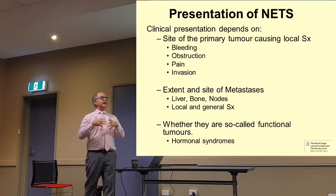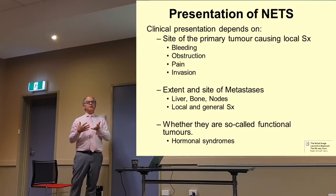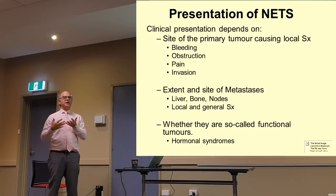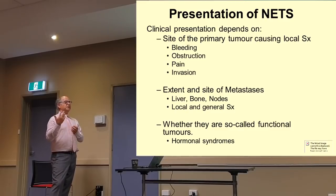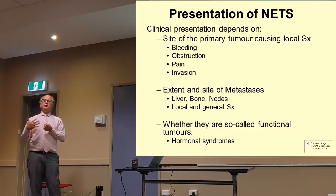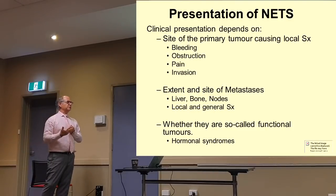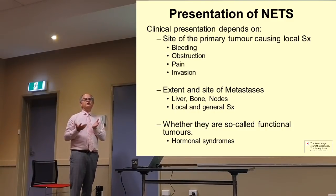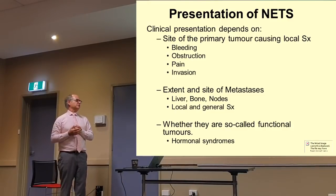In terms of how they present, it depends on where they come from. If it's from a small bowel or large bowel, you might have bleeding, obstruction, or pain. It depends on where the secondaries go — they might cause bone pain, liver pain, nausea and vomiting. Or you might have general tumour symptoms such as weight loss, nausea and vomiting, and loss of appetite.